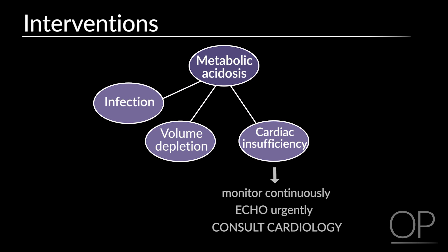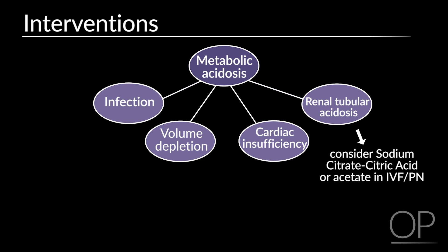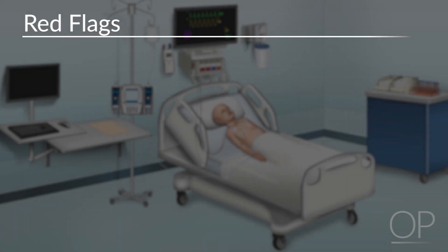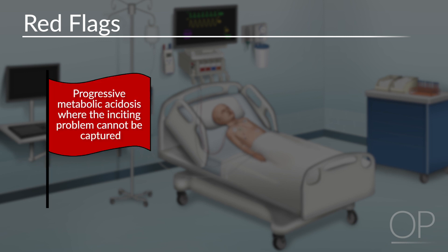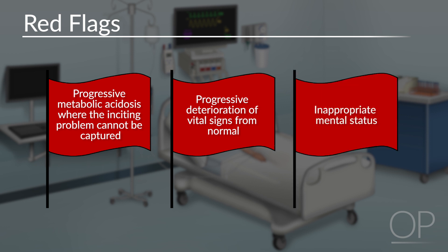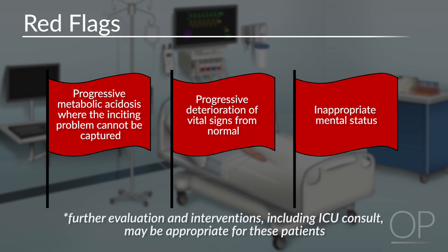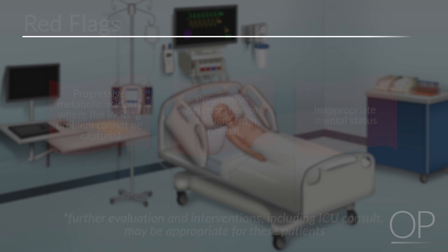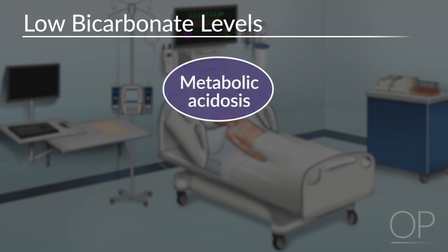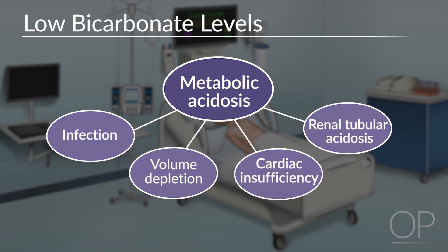For the patient with a more chronic picture who may have renal tubular acidosis, consider starting bicitra or increasing acetate in the IV fluid or parenteral nutrition to allow for compensation. Red flags for the patient with low bicarbonate in transplantation include progressive metabolic acidosis where the inciting problem cannot be captured, progressive deterioration of vital signs, and inappropriate mental status. For these patients, further evaluation and interventions including ICU consultation may be appropriate. In review, for the bone marrow transplant patient with low bicarbonate, most likely causes are metabolic acidosis due to infection, volume depletion, cardiac insufficiency, or renal tubular acidosis. Rapidly evaluate, determine the cause, and intervene.